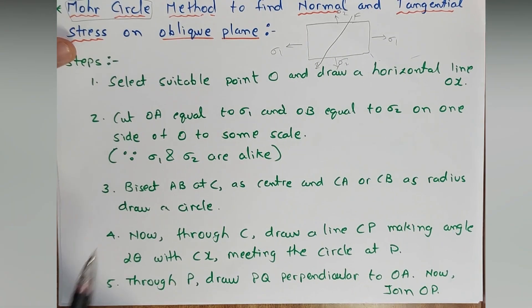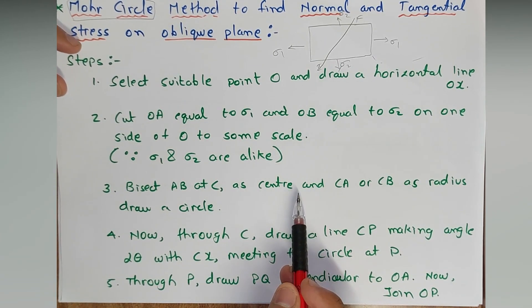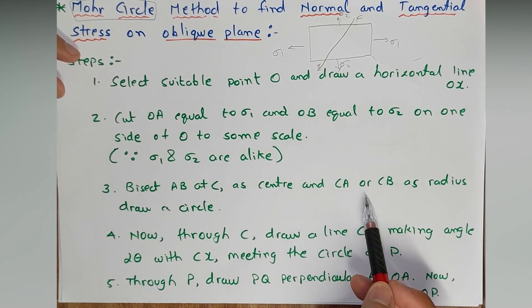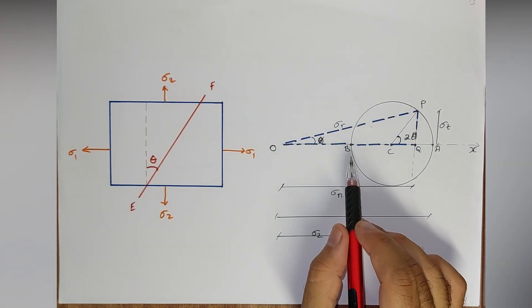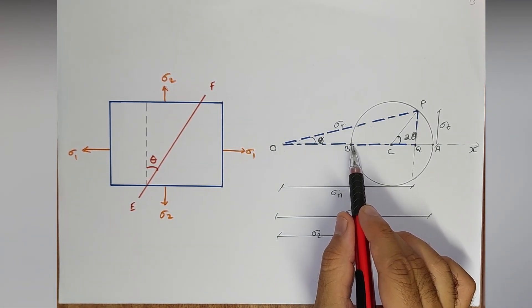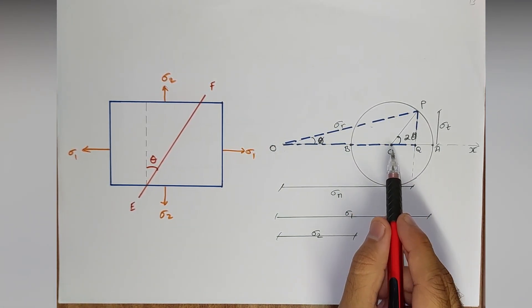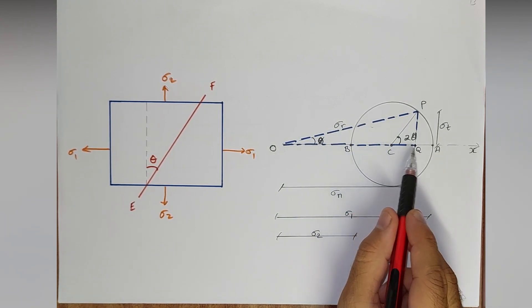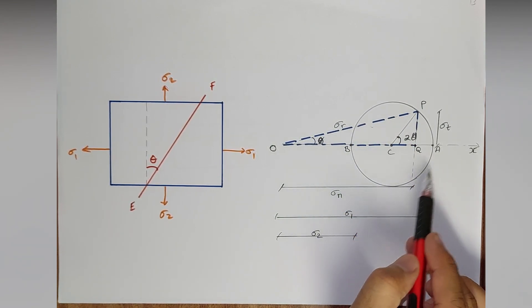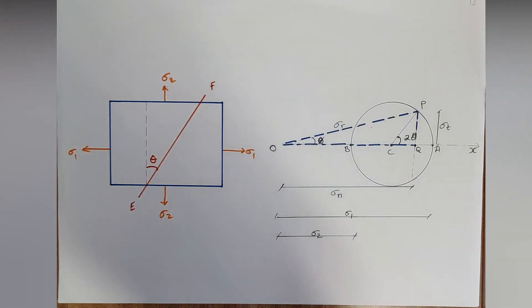Step 3 — bisect AB at C. With C as center and CA or CB as radius, draw a circle. AB is bisected at C, and with CA or CB as radius I have drawn a circle, so a circle is obtained.